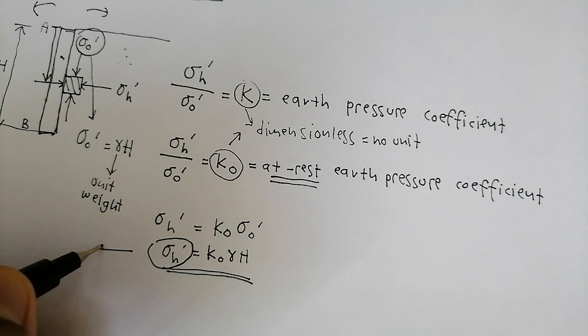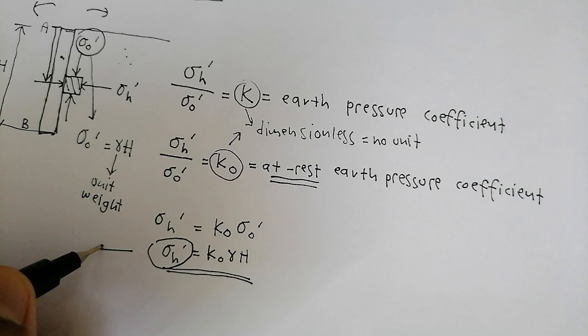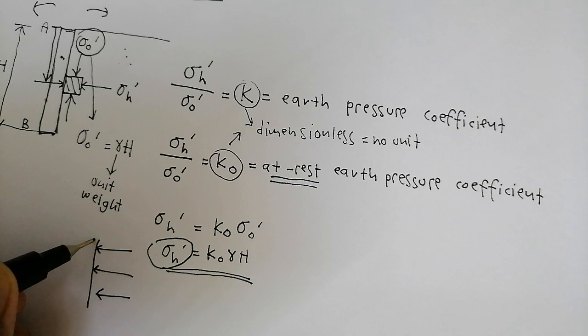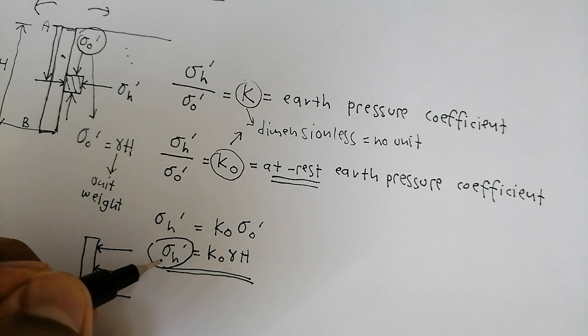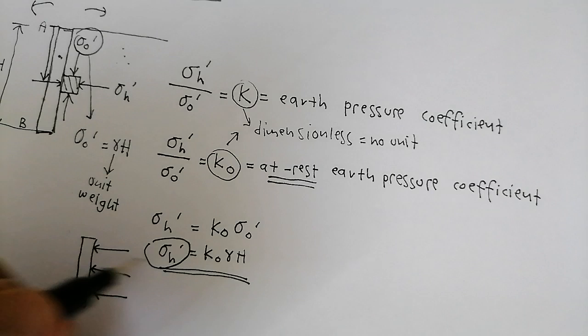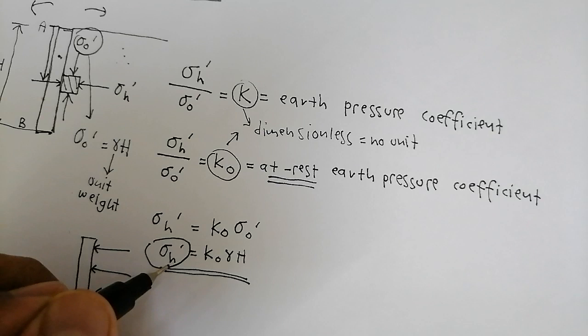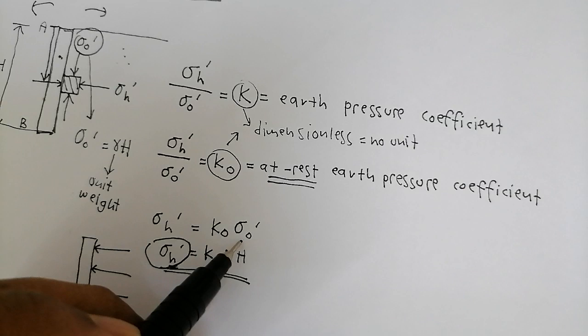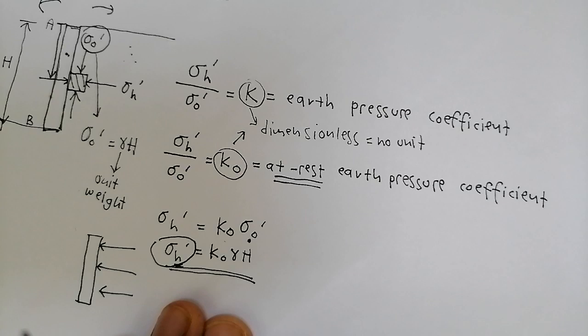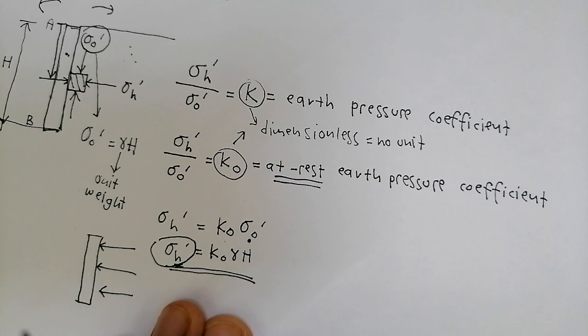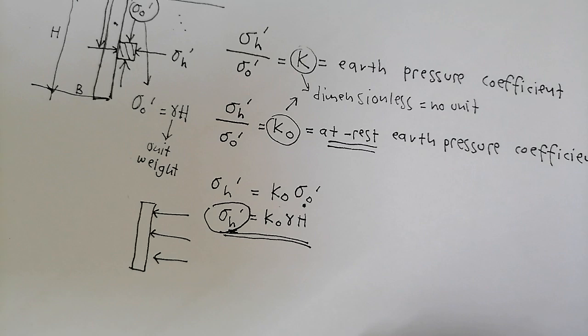This is the at-rest earth pressure. We are interested in horizontal stress because it is the force that will be experienced by your retaining wall — the force pushing from the sides. To calculate horizontal effective pressure, we also need the vertical effective stress and the earth pressure coefficient.